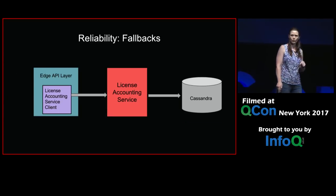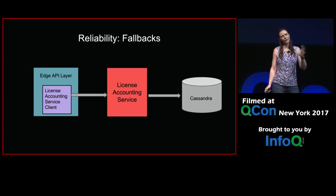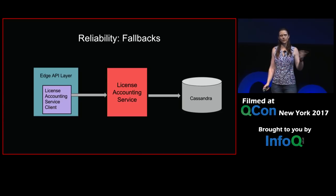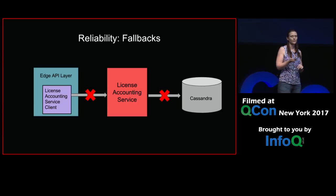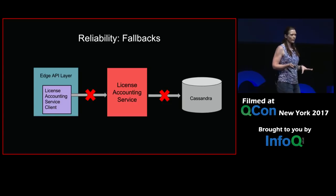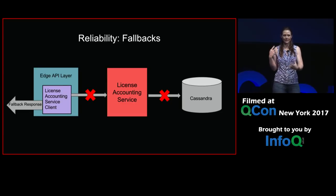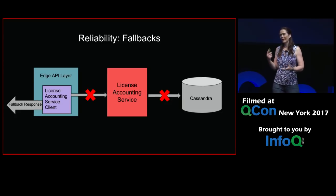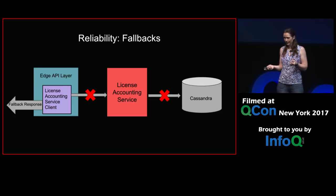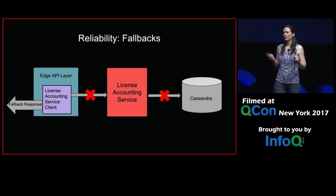What about reliability? I mentioned we have fallbacks. When the device makes a call to us, it hits our edge API layer, which has a license accounting service client — a REST client that talks directly to our license accounting service, which in turn talks to Cassandra. We have two points of failure here. If either one fails, we could disrupt client experience. So if our failure occurs, you shouldn't be punished for that. What we have is a default fallback response — this acts as if you've never had any licenses, as if you've never had any downloads, and given that scenario it provides the default response. We err on the side of customer experience. This gives us the ability to have an outage and you'll never even know. We have had one very brief outage and no one knew the better. This has definitely helped us with reliability.